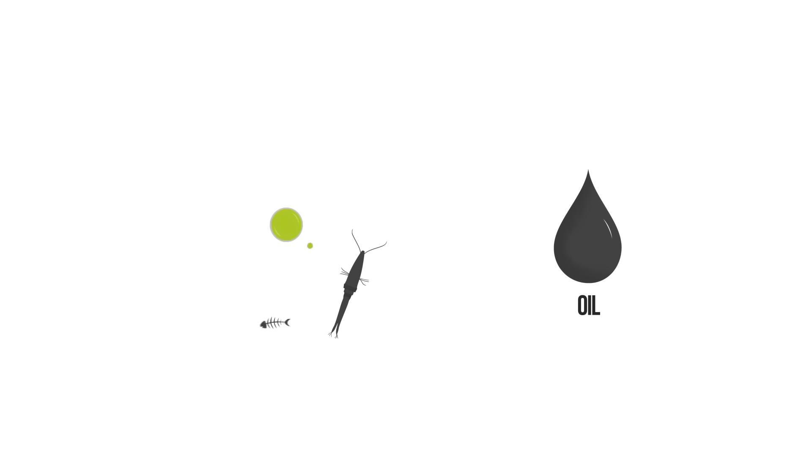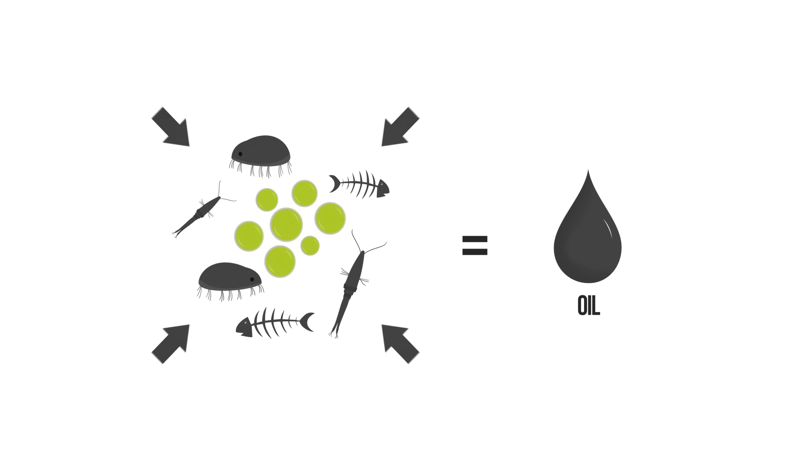Oil was formed from small organisms like zooplankton and algae, where pressure caused the more complex organic matter to decompose.